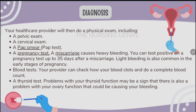Diagnosis of abnormal uterine bleeding can be done through a pelvic exam, cervical exam, and pap smear. A pregnancy test should be done, as a miscarriage causes heavy bleeding and you can test positive on a pregnancy test up to 35 days after a miscarriage. Light bleeding is also common in the early stages of pregnancy.